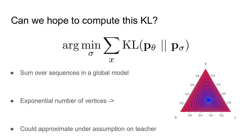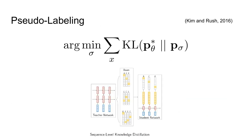So do we have any hope at all of doing knowledge distillation in these cases? The full KL is just vastly intractable. If we really wanted to minimize this objective, we would have to sum over all possible sequences in a global model. One way to think about this is that the simplex would now have an exponential number of vertices. However, what we can do is make some approximations over what the teacher might be doing. The simplest approximation is to just assume the teacher is going to put most of its mass into its argmax prediction. In practice, we refer to this approach as pseudolabeling — we simply find the argmax teacher prediction and then fit the student parameters to this sequence.